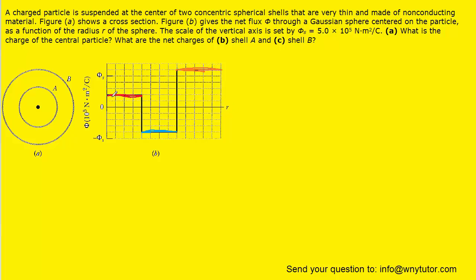For small values of R, the electric flux takes on the value colored in red. Coming over to this diagram, a small value of R would correspond to a spherical Gaussian surface whose radius is very small — maybe something like this. We'll notice that that Gaussian surface encloses only the central charge.